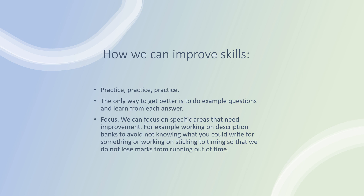And how can we improve upon skills? Well, practice. The only way to get better at doing them is to do example and past paper questions and learn from each answer. We can then focus on specific areas that need improvement. For example, we can work on description banks if you're finding it hard to think of words to use — phrases, similes, and metaphors. We can have a bank that can be used for several situations and you can incorporate them into your writing.